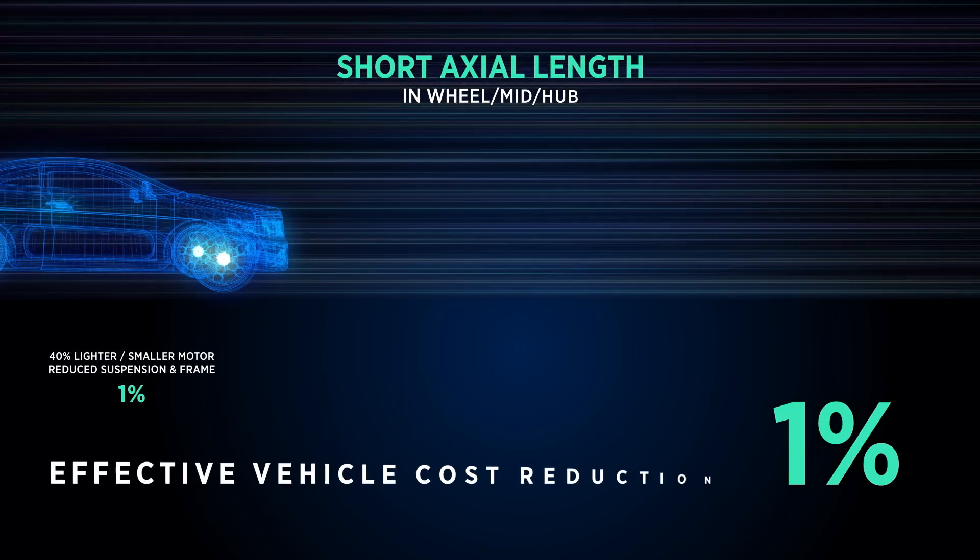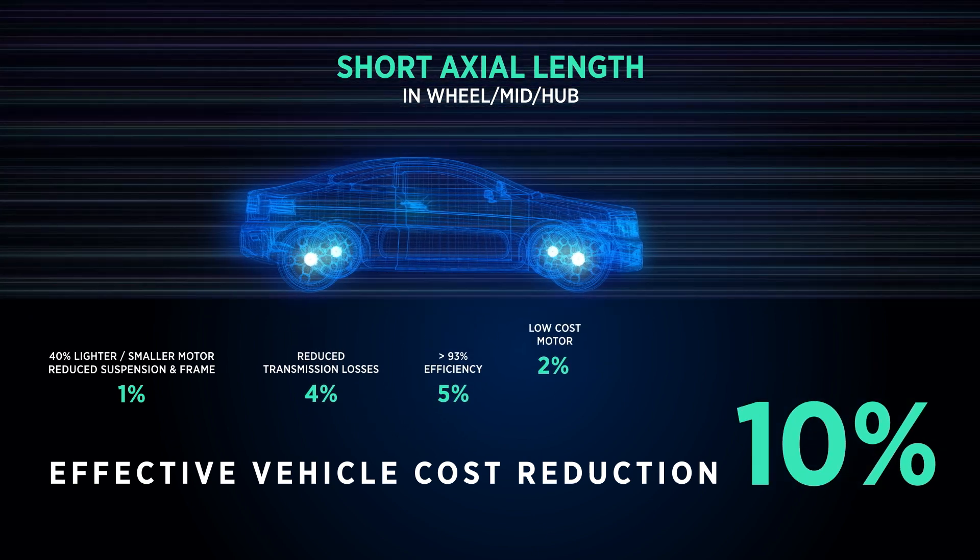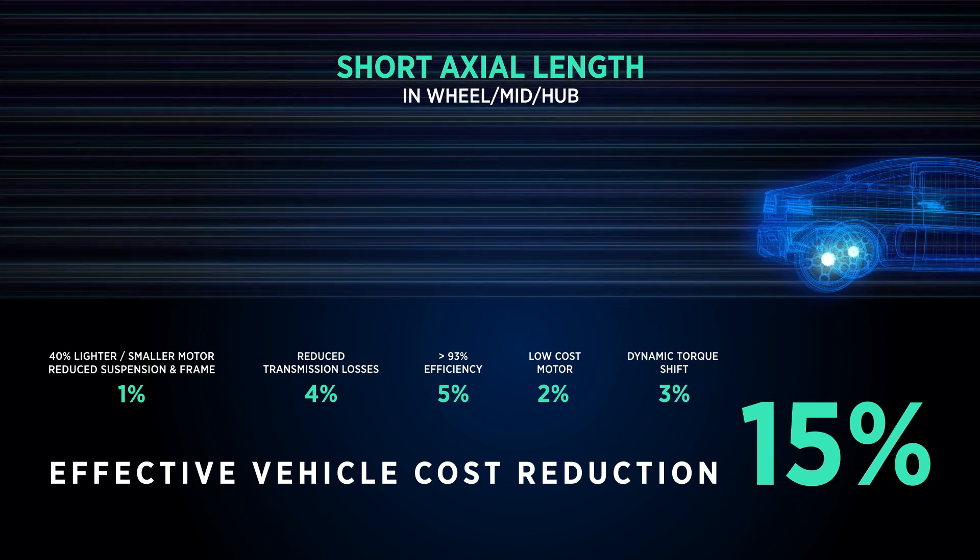Lighter and compact in-wheel motor reduces the EV frame, suspension and transmission. High operating frequency, segmented armature and distributed winding ensures high flux density and dynamic torque shift enabling high efficiency.